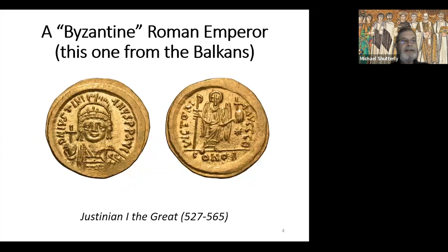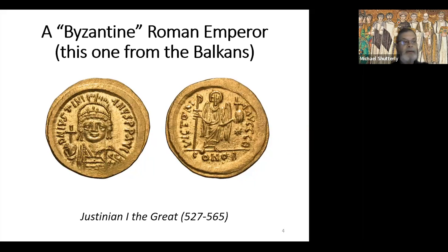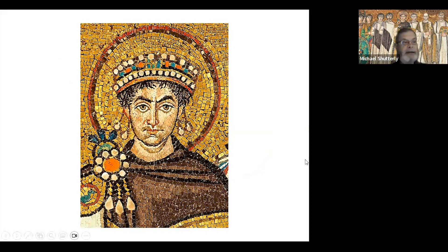Then there's this fellow — a Byzantine gold solidus of Justinian the Great. From contemporary descriptions, we know pretty much what he looked like, and this is not it. You absolutely would not recognize the real Justinian from this coin. So you might think the Byzantines just didn't know how to do coin portraits, but you'd be wrong. This is a mosaic portrait of Justinian from the Church of San Vitale in Ravenna, created in the 6th century. This portrait is very realistic — if you ran into Justinian in the street after seeing this, you'd probably recognize him. So if they could do realistic portraits, why didn't they?